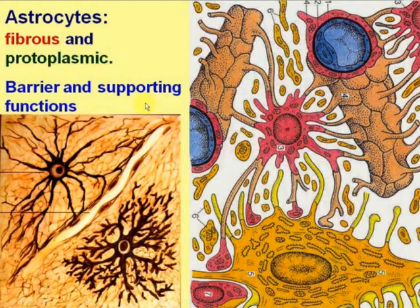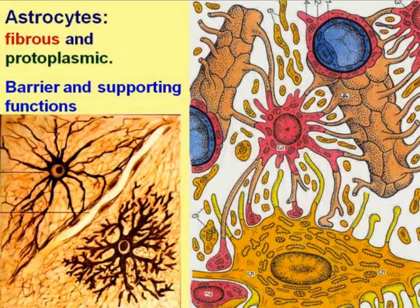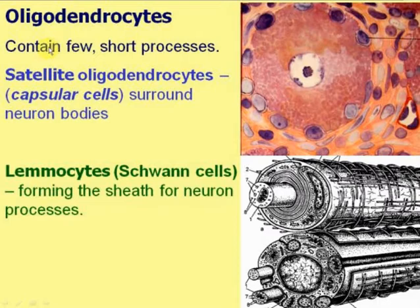The supporting function means that the long processes of astrocytes support nerve cells in space, providing them specific localization and organization of their processes.